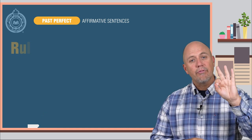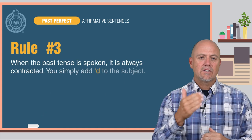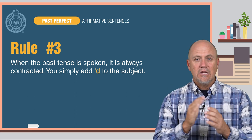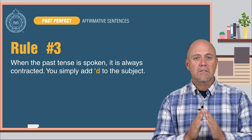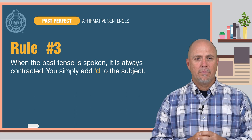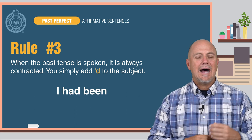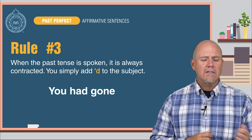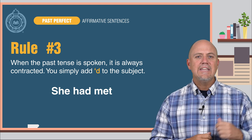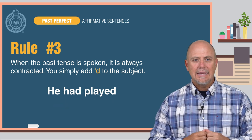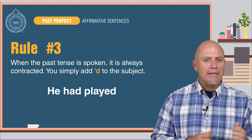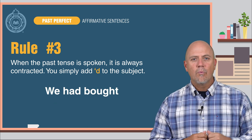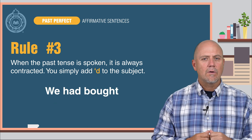Rule number three: when the past perfect tense is spoken, it is always contracted. You simply add apostrophe -d to the subject. Look at the examples: I had been → I'd been. You had gone → you'd gone. She had met → she'd met. He had played → he'd played. It had rained → it'd rained. We had bought → we'd bought.